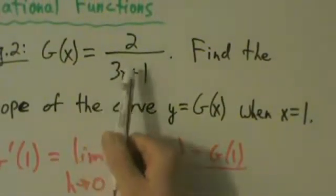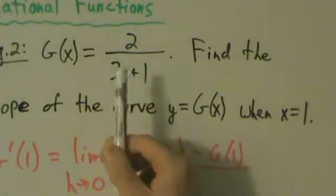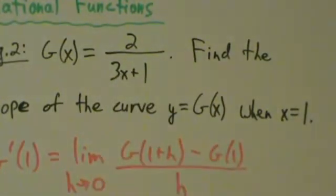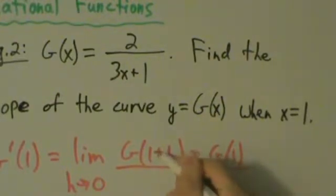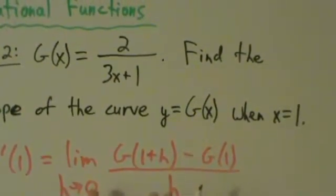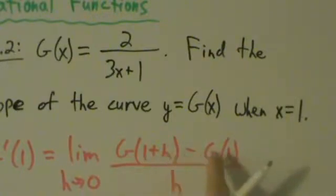So here, G(x) is a rational function, and it's a little more complicated than the first one we looked at. So the algebra is going to be a little bit messier, but that's okay. The idea is still the same.